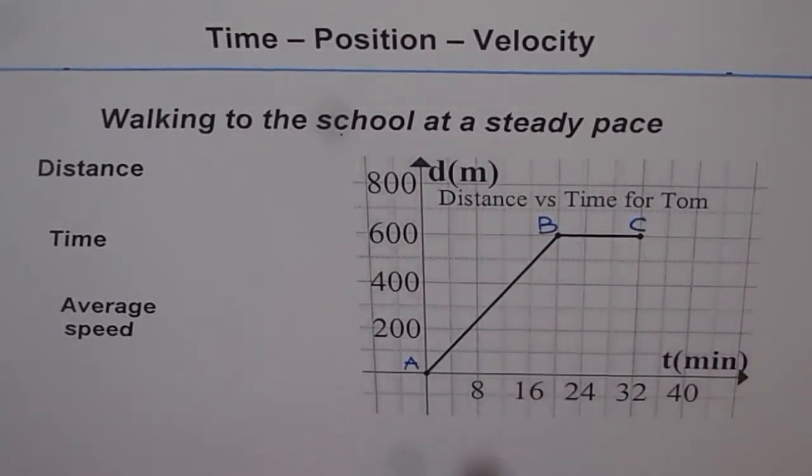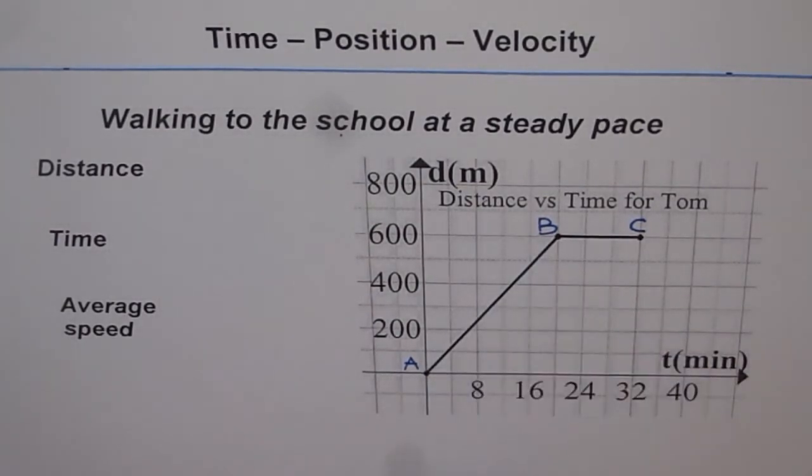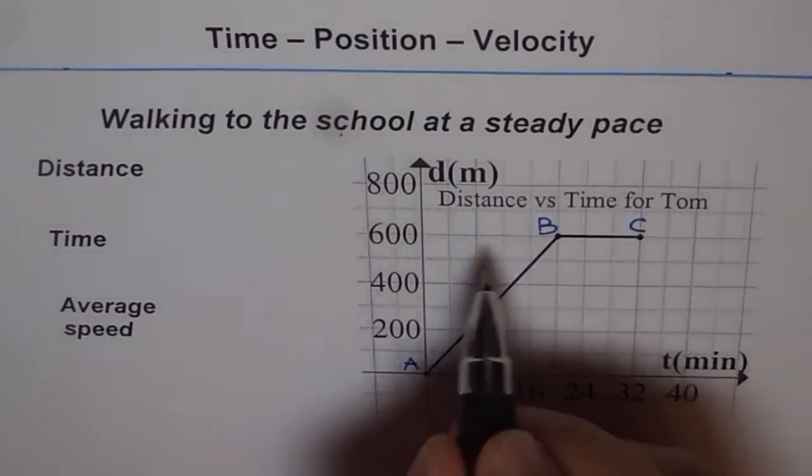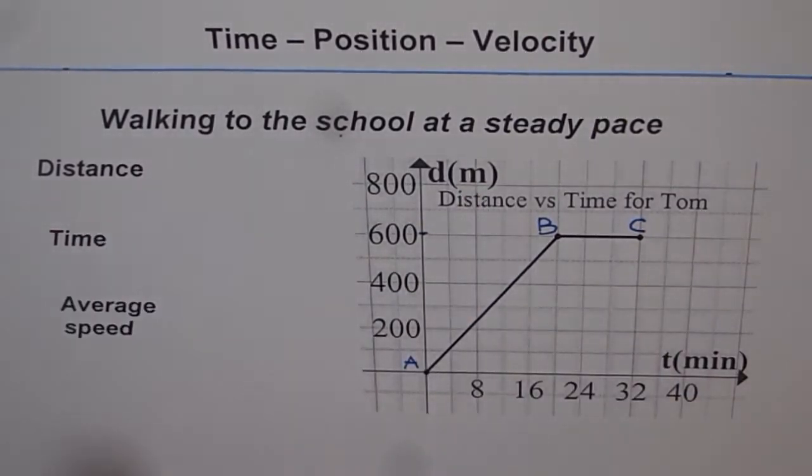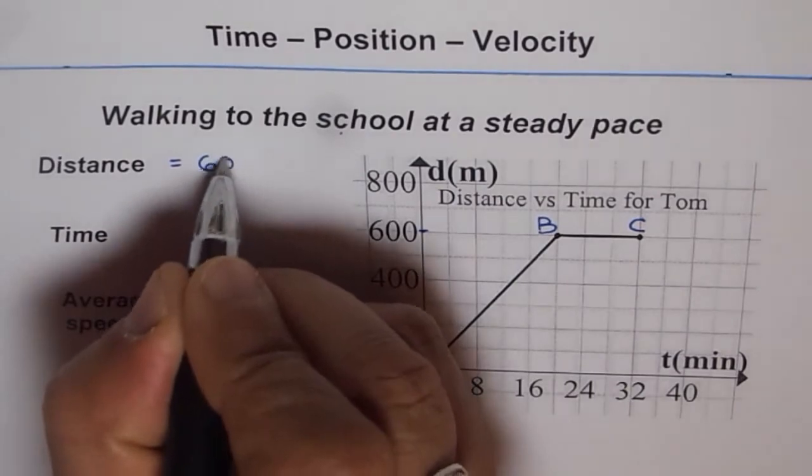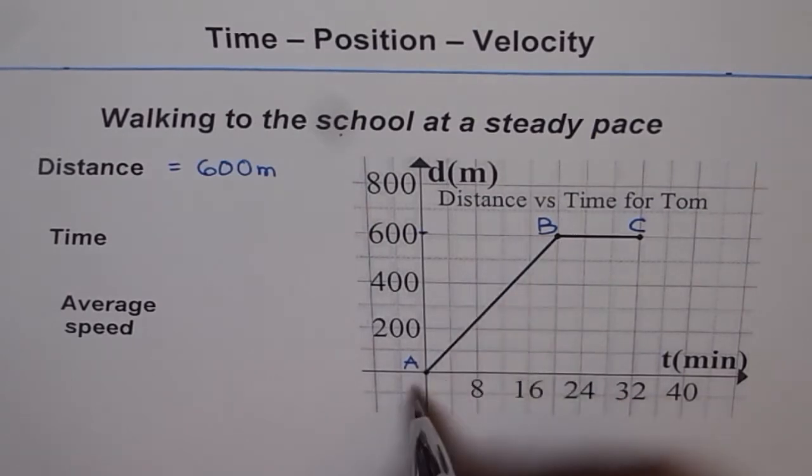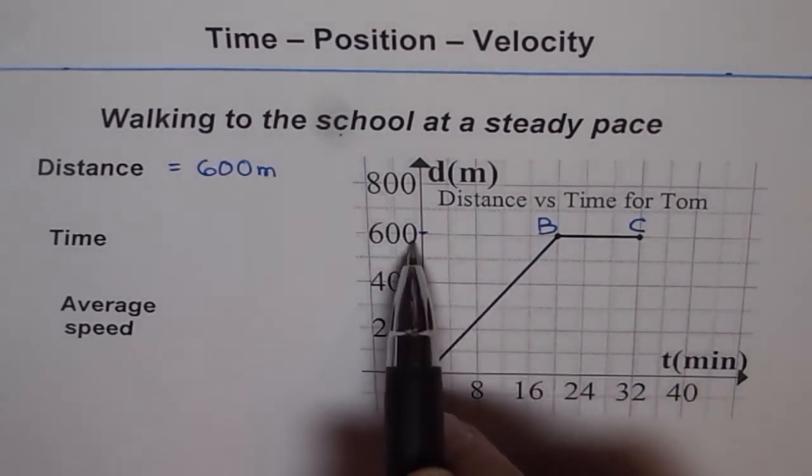So in our story Tom starts from position a which is the home and reaches school which is at point b. In doing so how much distance does Tom cover? Well the distance covered is along the y-axis and we see the distance is 600 meters. That means distance of school from home is 600 meters. So we can write distance equals 600 meters. So we can straight away read distance from the graph between two points. So if we have a distance versus time graph we can read distance straight from the graph.